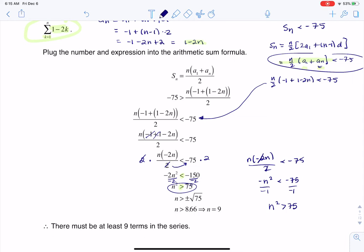I take the square root of both sides. Technically, the plus or minus pops in. But really, I need to take the positive root because n can only be a positive number. And so I get 8.66. But keep in mind that n also must be a whole number. So if it has to be greater than 8.66, it has to be at least 9. So that's why I say there must be at least 9 terms in the series.